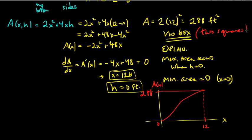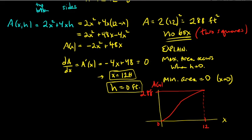Part a gave a legitimate answer with a real box; part b was a trick question where the maximum occurs at an endpoint with no valid box. Moving on to indefinite integrals, number 15.